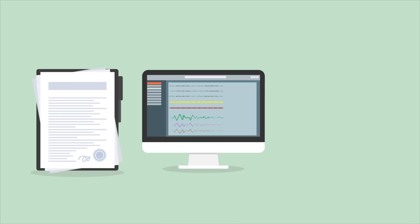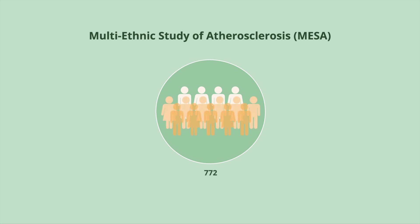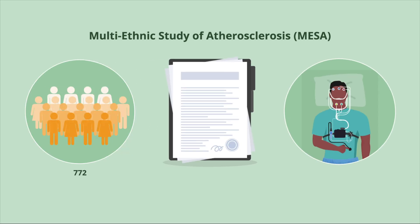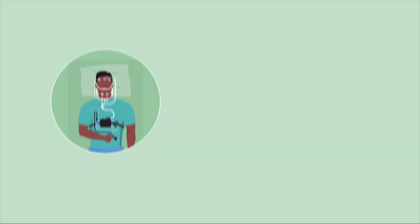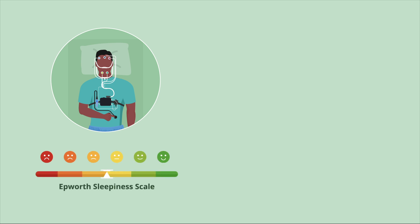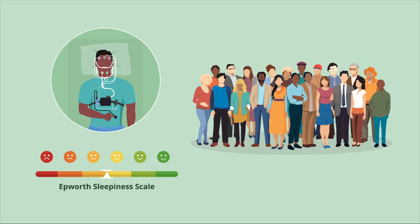Using data from a large community sample available from the Multi-Ethnic Study of Atherosclerosis, or MESA, researchers analyzed the polysomnographic data from 772 individuals. They used a previously described automated method to estimate the proportion of breaths considered flow-limited, as measured via a nasal pressure sensor. Excessive daytime sleepiness was defined as those with an Epworth Sleepiness Scale score of 11 or greater. The study included a relatively diverse cohort, including black, white, Hispanic, and Chinese-American men and women.